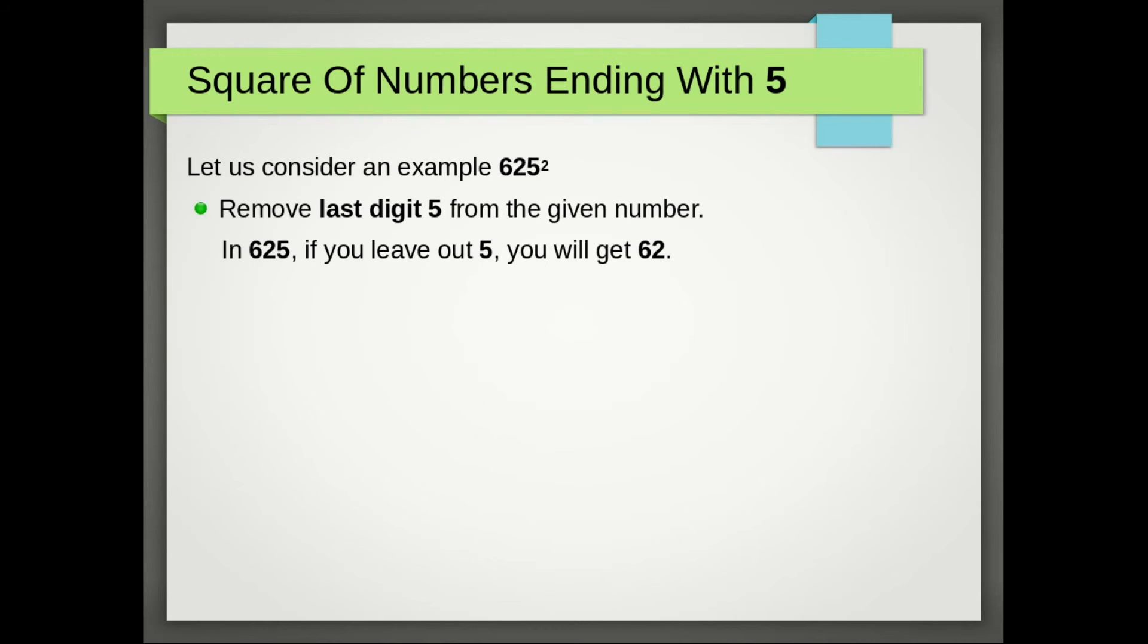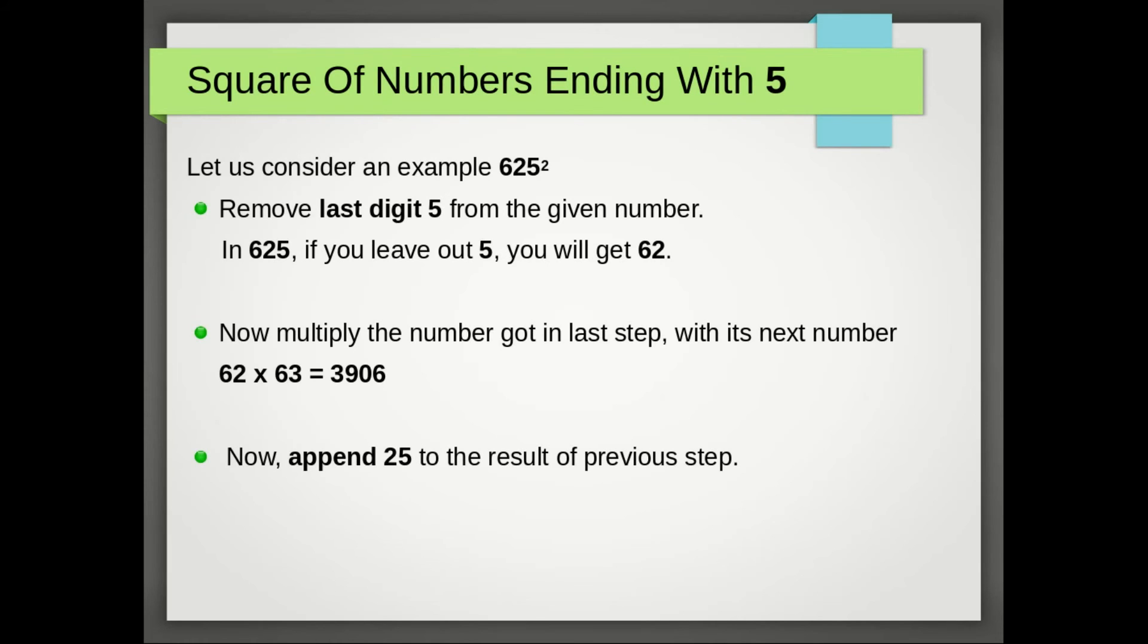In 625, if you leave out 5, you will get 62. Now multiply the number got in last step with its next number: 62 × 63 = 3906. Now append 25 to the result of previous step.